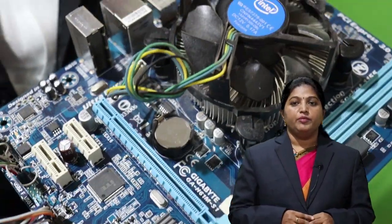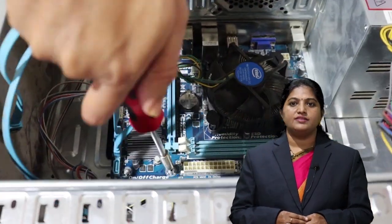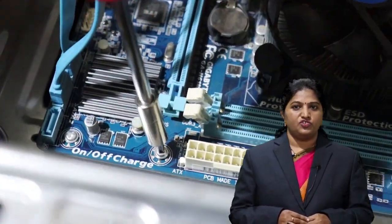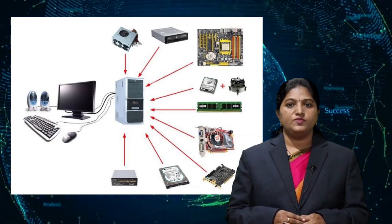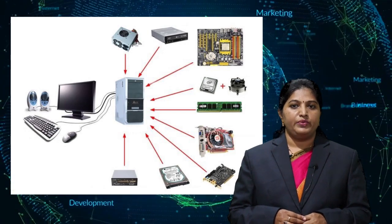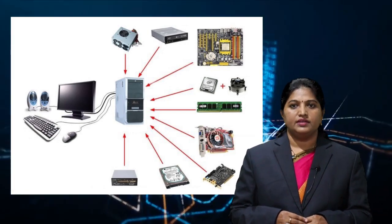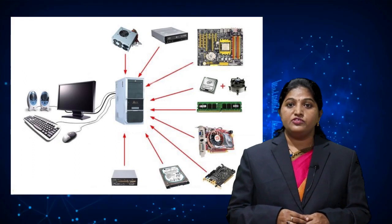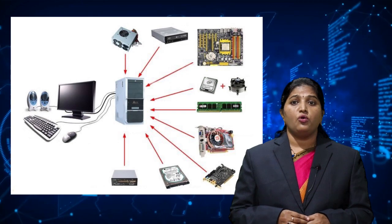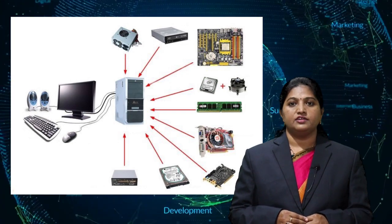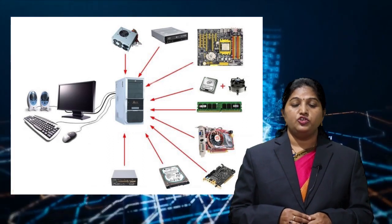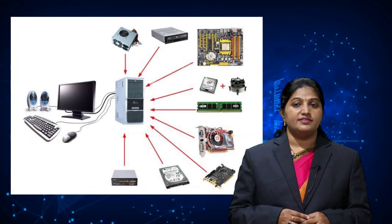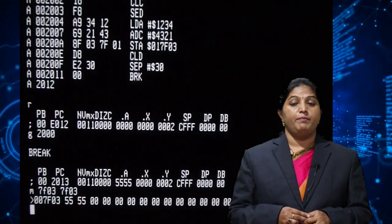Computer hardware consists of the physical parts of a computer that you can see and touch. Some examples are the CPU, monitor, mouse, keyboard, speakers, printer, and motherboard. These are the electronic devices used to build up the computer. Hardware is so called because it is hard or rigid. The hardware is instructed by software to do any work, and can understand only low-level language, or machine language.